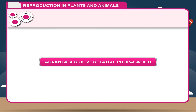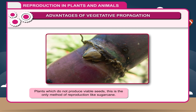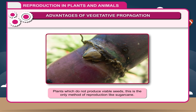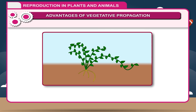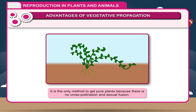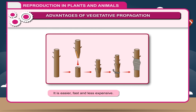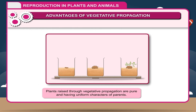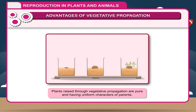Advantages of Vegetative Propagation. 1. Plants which do not produce viable seeds — this is the only method of reproduction for them, like sugar cane. 2. It is the only method to get pure plants because there is no cross-pollination and sexual fusion. 3. It is easier, fast and less expensive. 4. Plants raised through vegetative propagation are pure and have uniform characters of the parent.